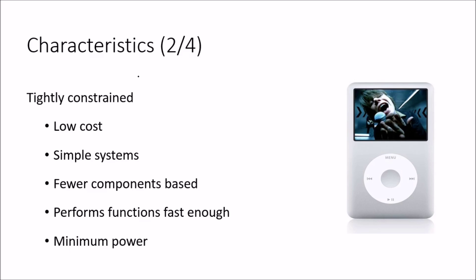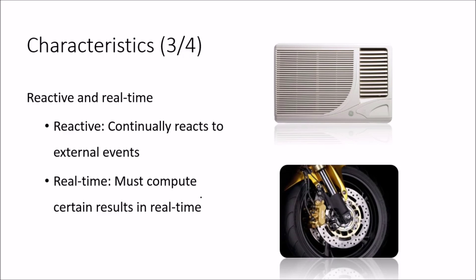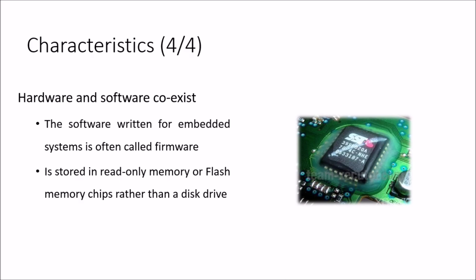The second characteristic is that they are tightly constrained — that is, low cost, simple systems, fewer components, performing functions fast enough, and using minimum power. The third characteristic is reactive and real time: reactive means the system continually reacts to external events, and real time means it must compute certain results within real-time deadlines — no post-processing.